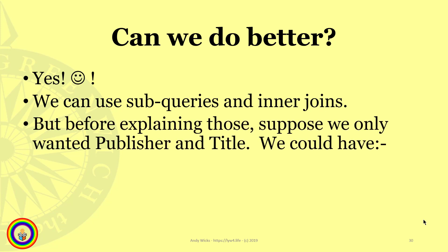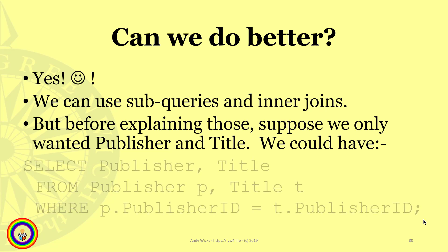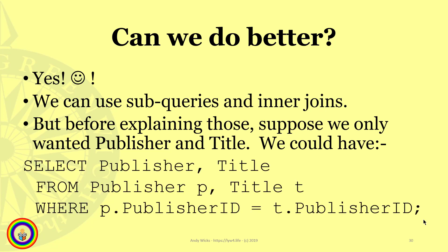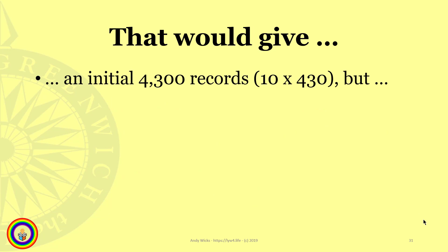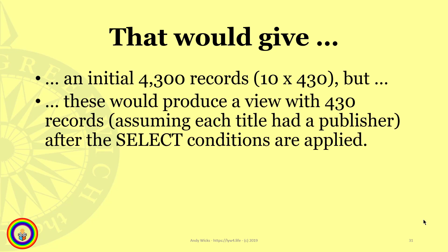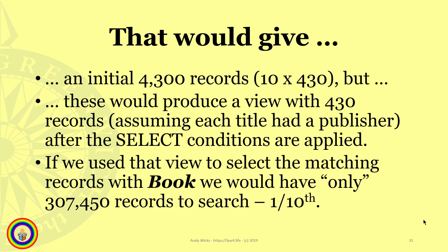Before explaining these, suppose we only wanted publisher and title. We could select publisher and title from the publisher and title tables, linking via the publisher ID. If we did that, it would give an initial 4,300 records — 10 records in publisher and 430 in title — but these would produce a view with only 430 records, assuming each title had a publisher, after the select conditions are applied. If we used that view to select matching records with book, we'd have only 300,000 records to search — a tenth of what we had before.